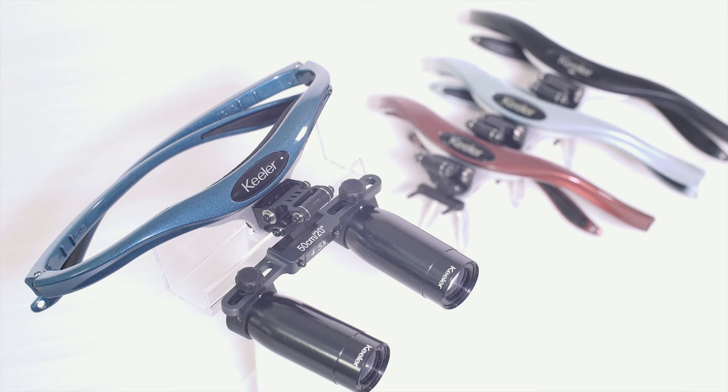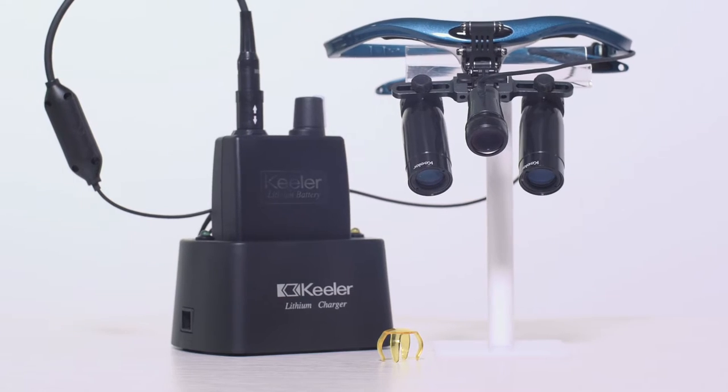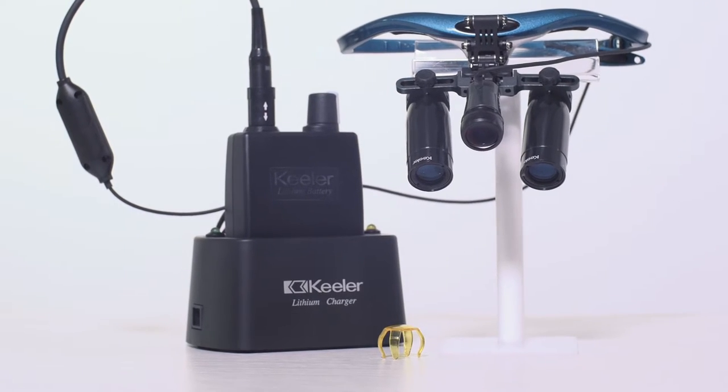All loops are available on our line of colorful sport frames or our headband mounted. This video will provide an overview of the Keeler Loops, Frames and Lighting features and a guide on how to use them.